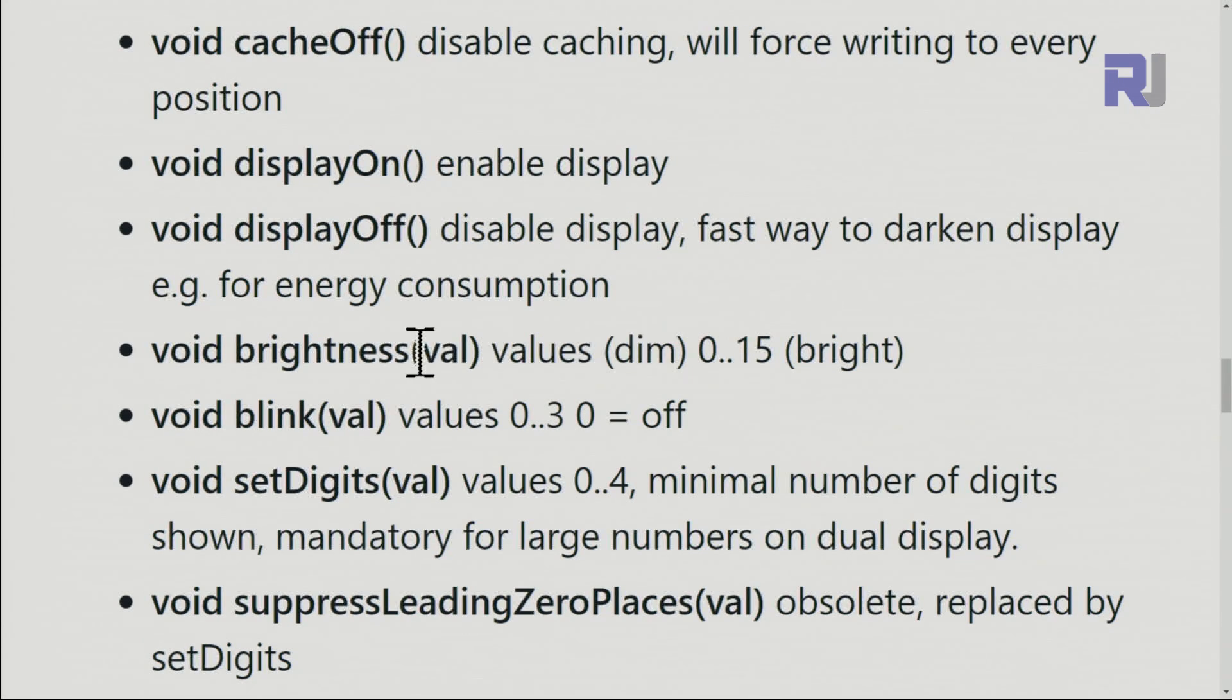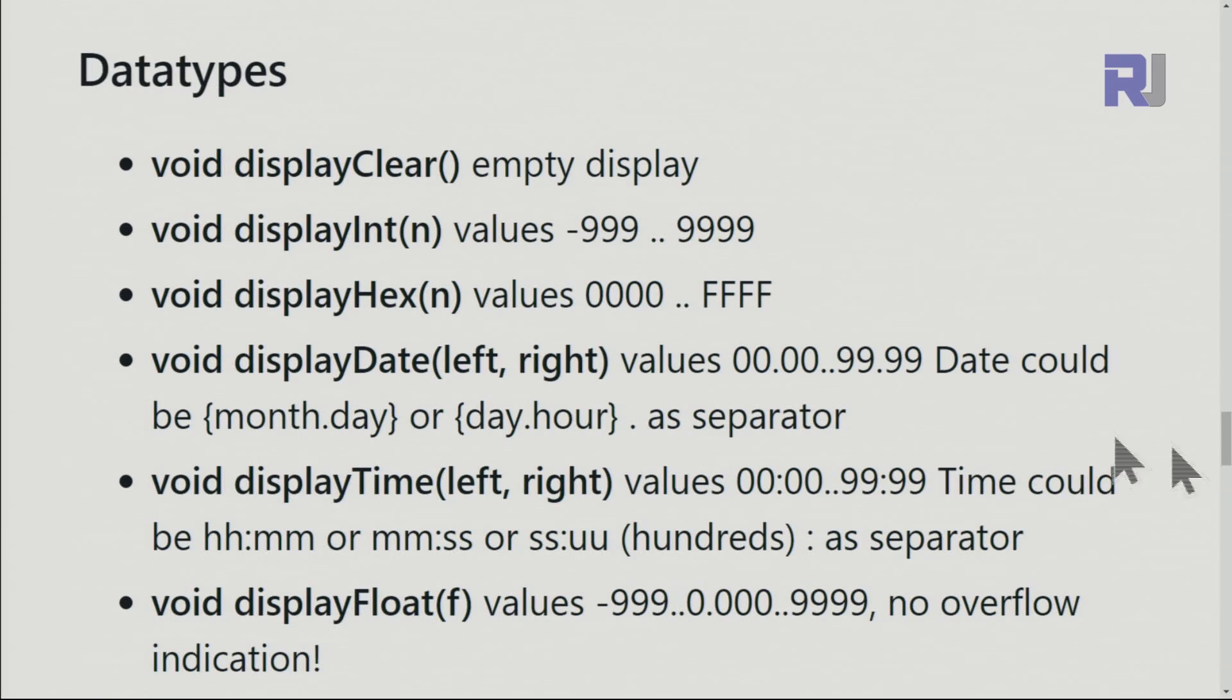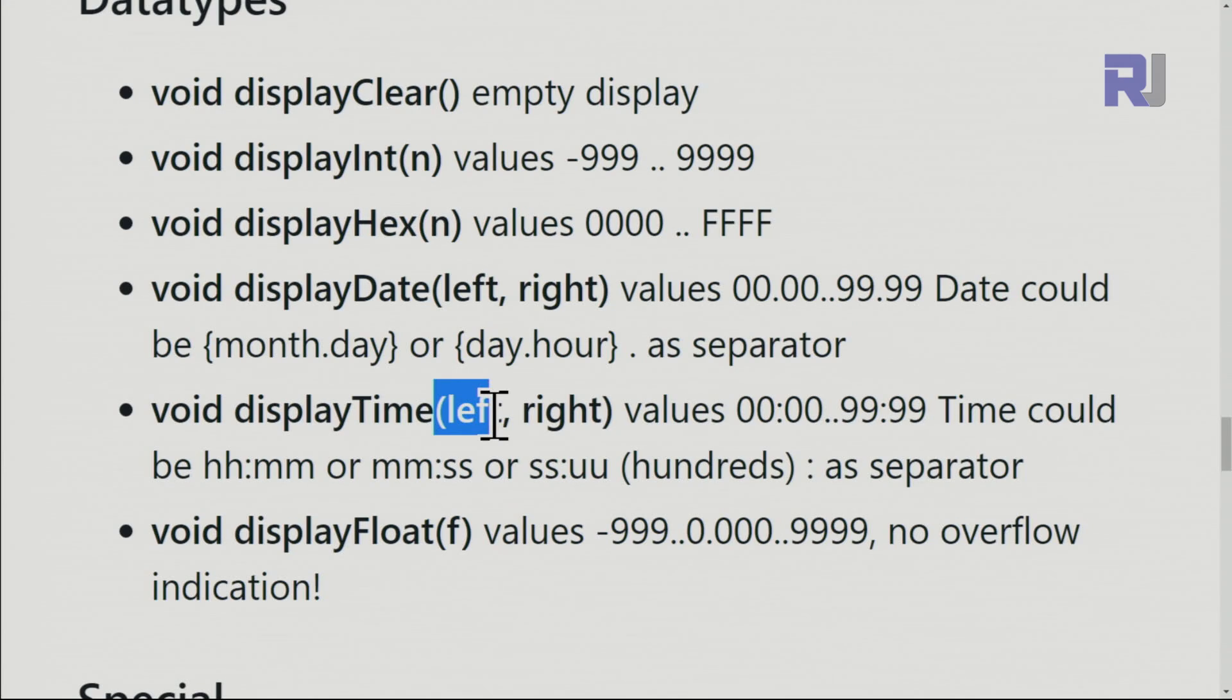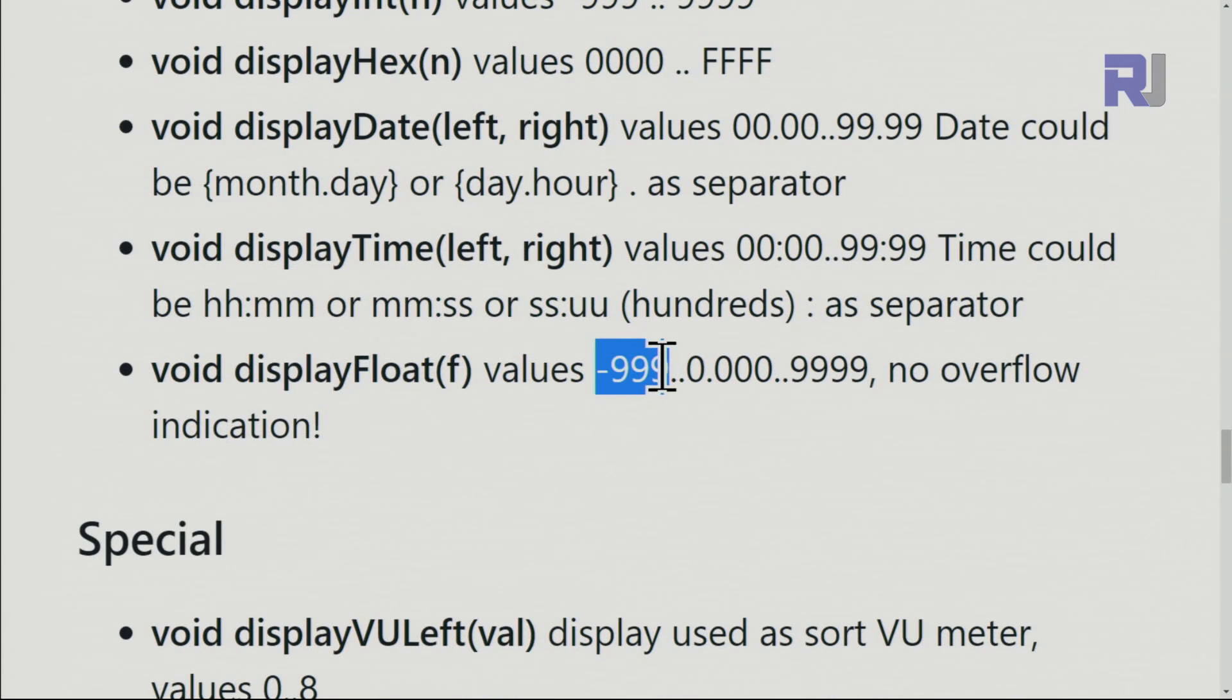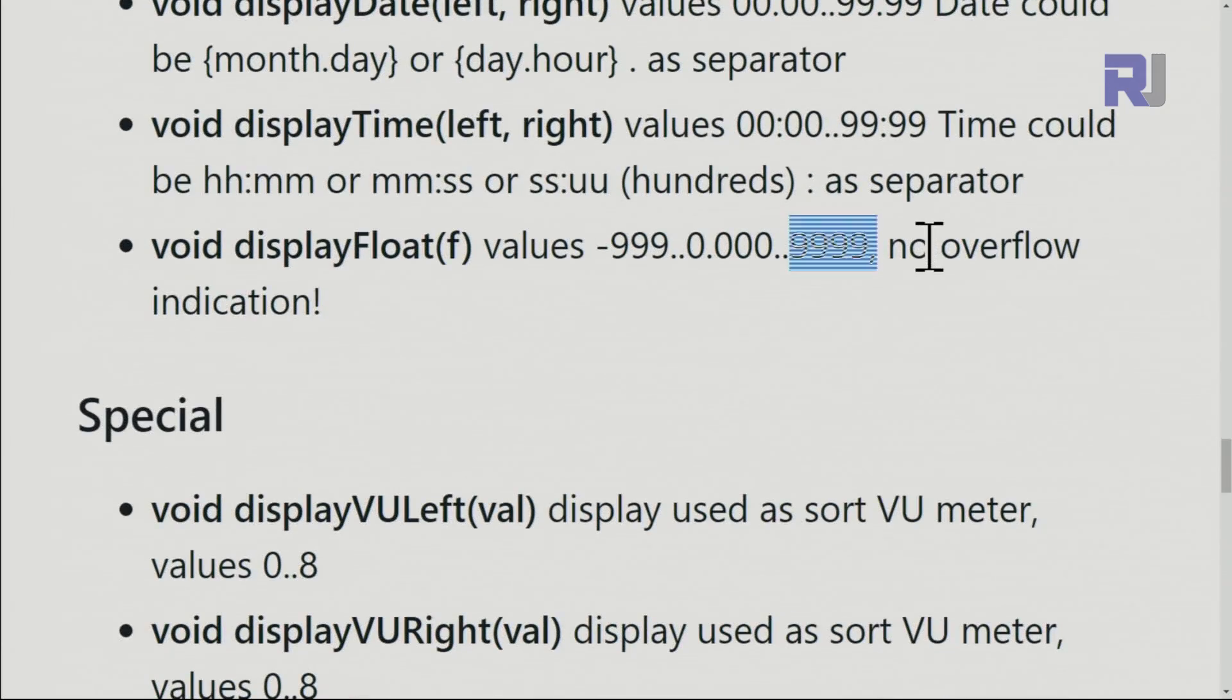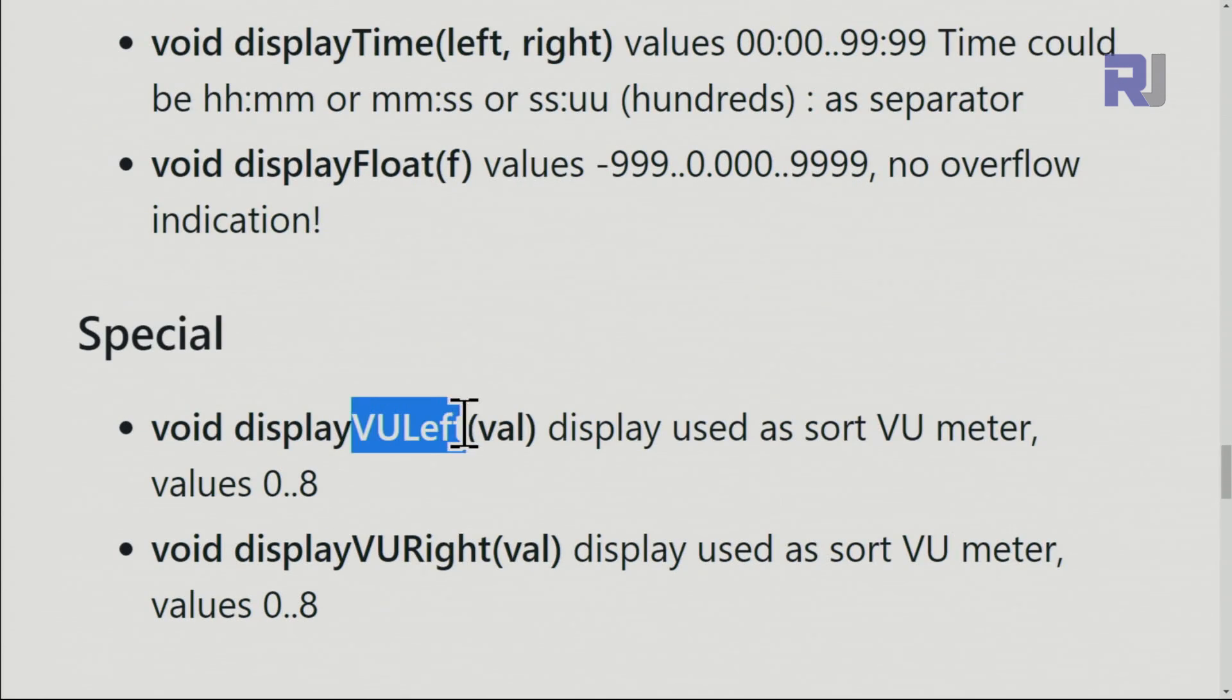So 0 is dim, 15 is brightest. You just put the number here. If you want to blink, set the number of blinks from 0 to 3 for how fast it blinks. From data types you can display integer, hexadecimal. When you display dates you send two portions, for example month and day, you just put a comma. You have month, day, or hour as a separator. If you want to display time, you send minute and hour, then turn the colon on or off separately. For float you just put from minus 999 because it's four digits, up to 9999, and there is no overflow indication. If you want to use it as a level meter, you can display VU left or VU right.